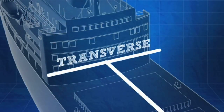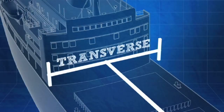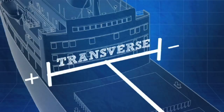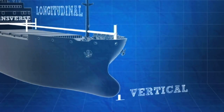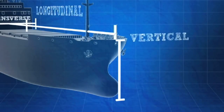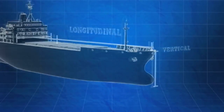Transverse is the horizontal direction across the beam of a ship. Transverse distances are measured port or starboard from the centerline, with one written as a positive distance and the other as negative. It is not standard which is which, however, and this varies from ship to ship as well. Vertical distances on a ship are measured upward from the baseline, or lowest point of the keel.